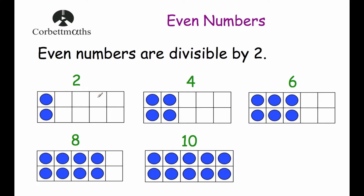So here we've got some even numbers: 2, 4, 6, 8 and 10. And as you can see, they're all divisible by 2. In other words, they can be shared equally between 2. So if you look at each of the rows, they can be shared between 2 equally.